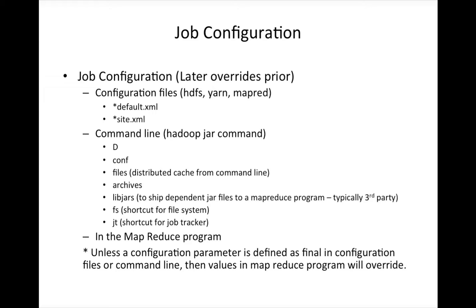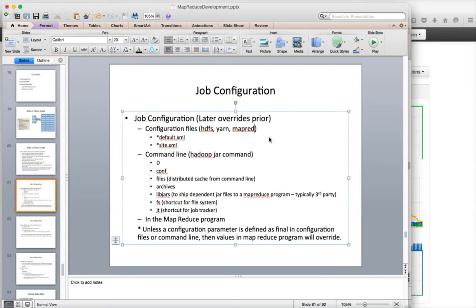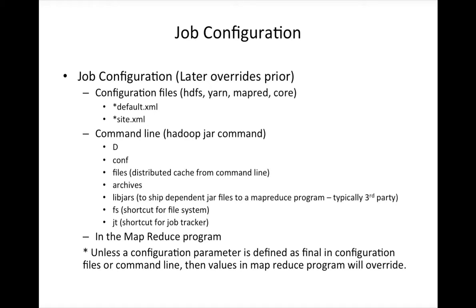They are XML files which have properties with names and values. A few examples: fs.defaultFS comes from core-site.xml — there's also core-site.xml and core-default.xml — and fs.defaultFS is a parameter that points to your namenode IP address. Similarly, the resource manager address is the IP address and port number for the resource manager, which is part of yarn-site.xml. These XML files have hundreds of parameters like block size, replication factor, memory settings for mappers, reducers or containers, and IP addresses and port numbers for web interfaces.